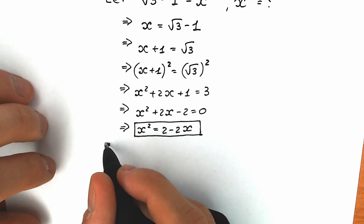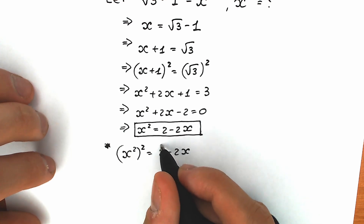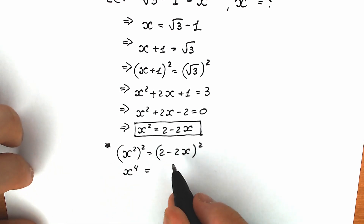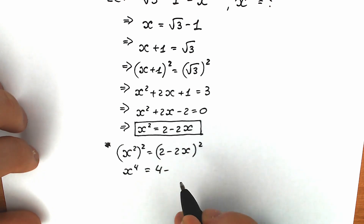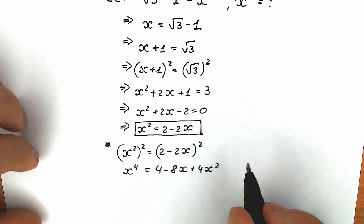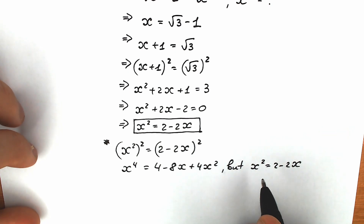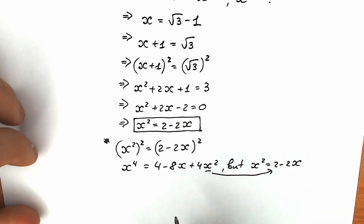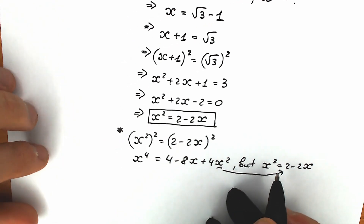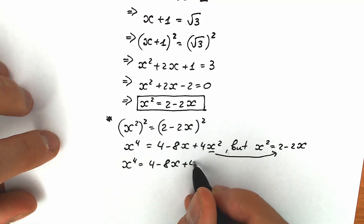Let's raise both sides of x squared equal to 2 minus 2x to the second power. Using the basic power rule, on the left we get x to the 4th power. On the right, squaring 2 minus 2x gives 4 minus 8x plus 4x squared. But keep in mind that x squared equals 2 minus 2x, so instead of x squared let's plug in 2 minus 2x to reduce the power.